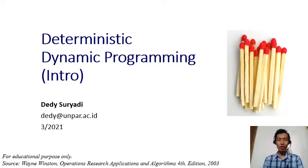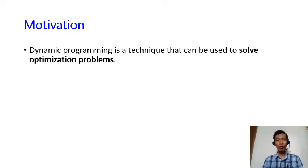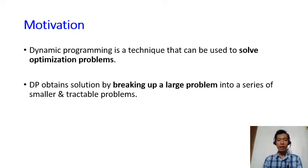Hello and welcome to the Operations Research 2 course. The first topic we're going to talk about is dynamic programming — specifically, deterministic dynamic programming. Dynamic programming is a technique used to solve optimization problems, the same purpose as linear programming from Operations Research 1. The difference is that dynamic programming breaks up a large problem into a series of smaller and tractable problems.